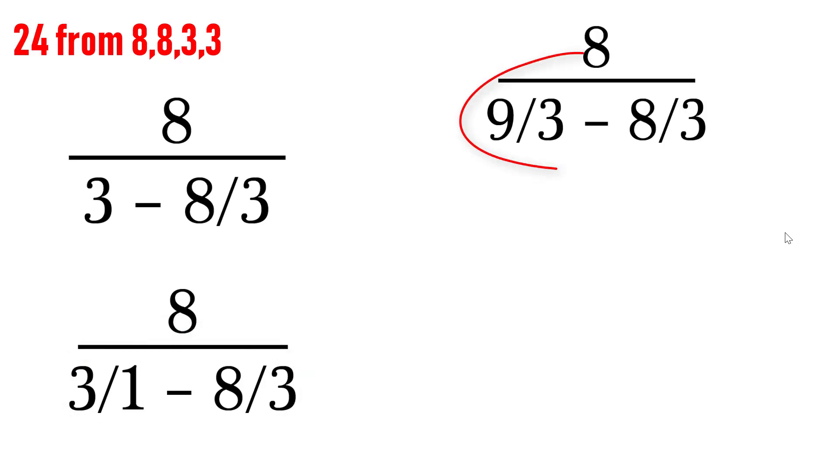The common denominator will be 3. So, multiply 3/1 by 3/3 to obtain 9/3. I have done this to simplify the calculation.